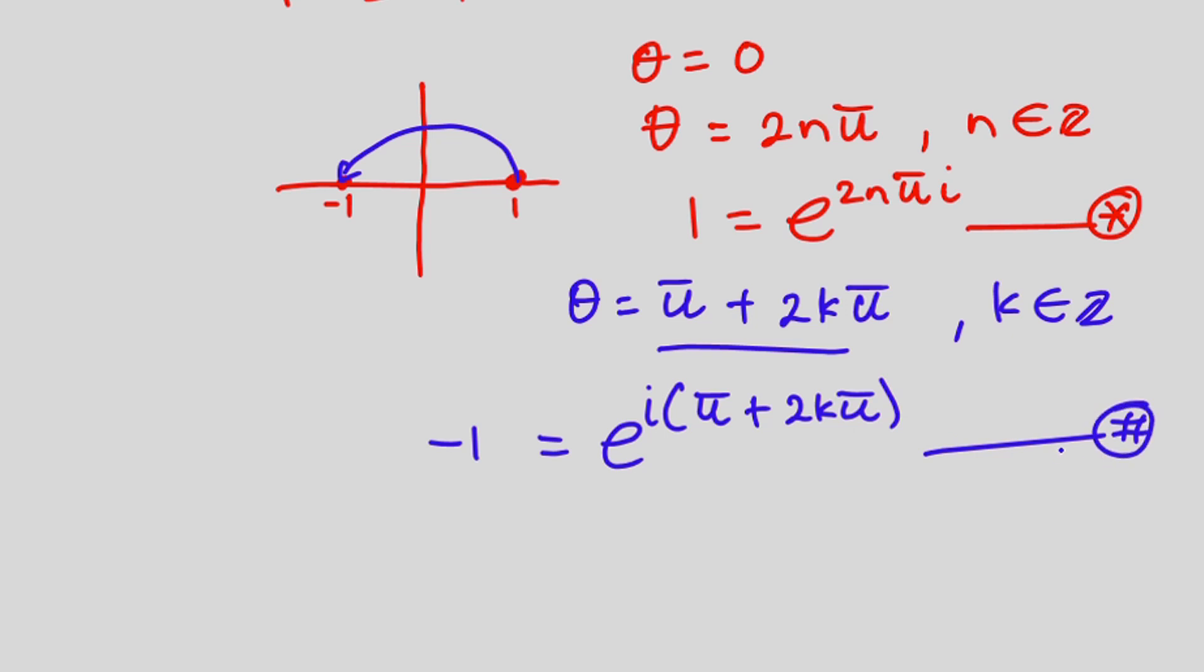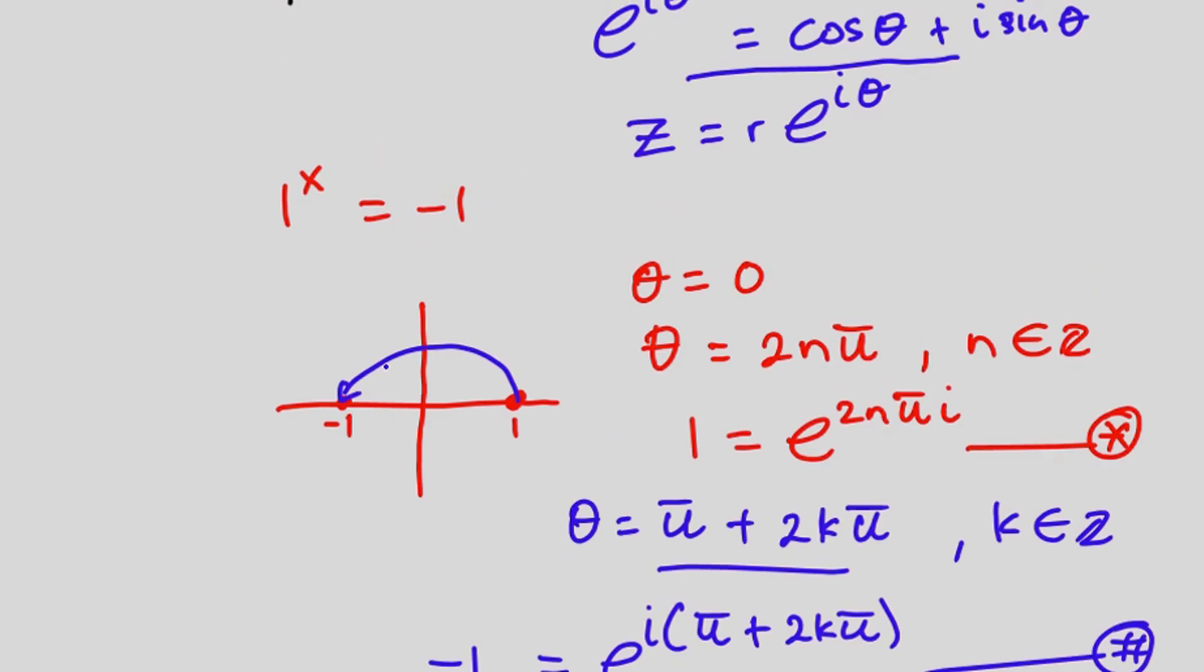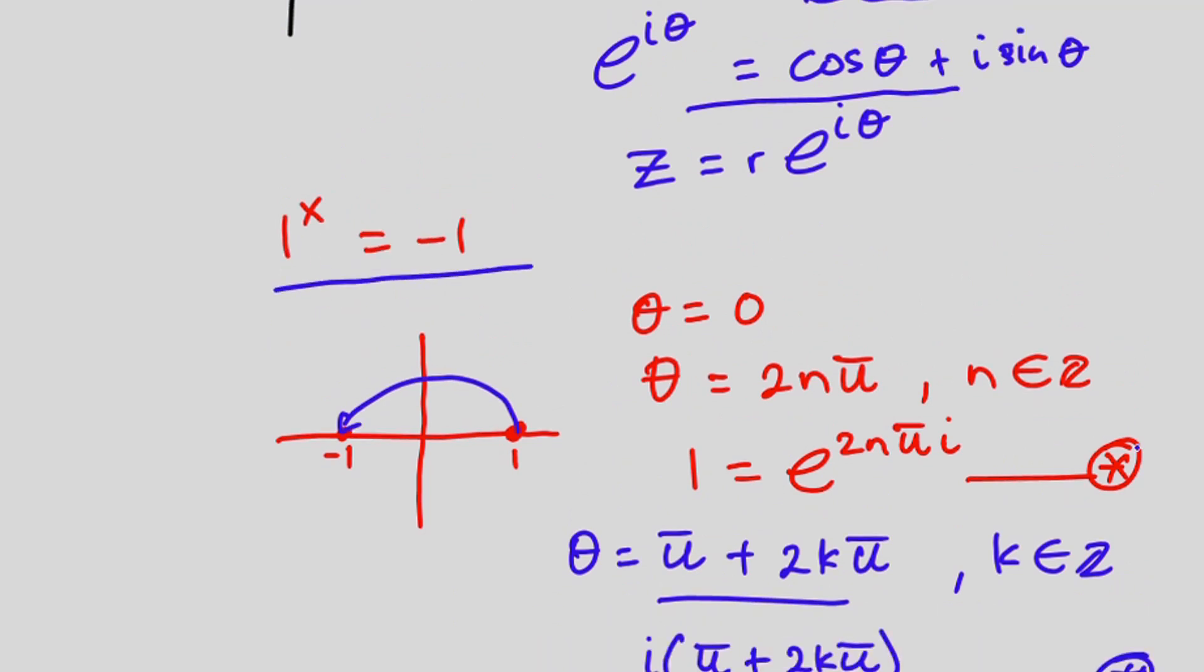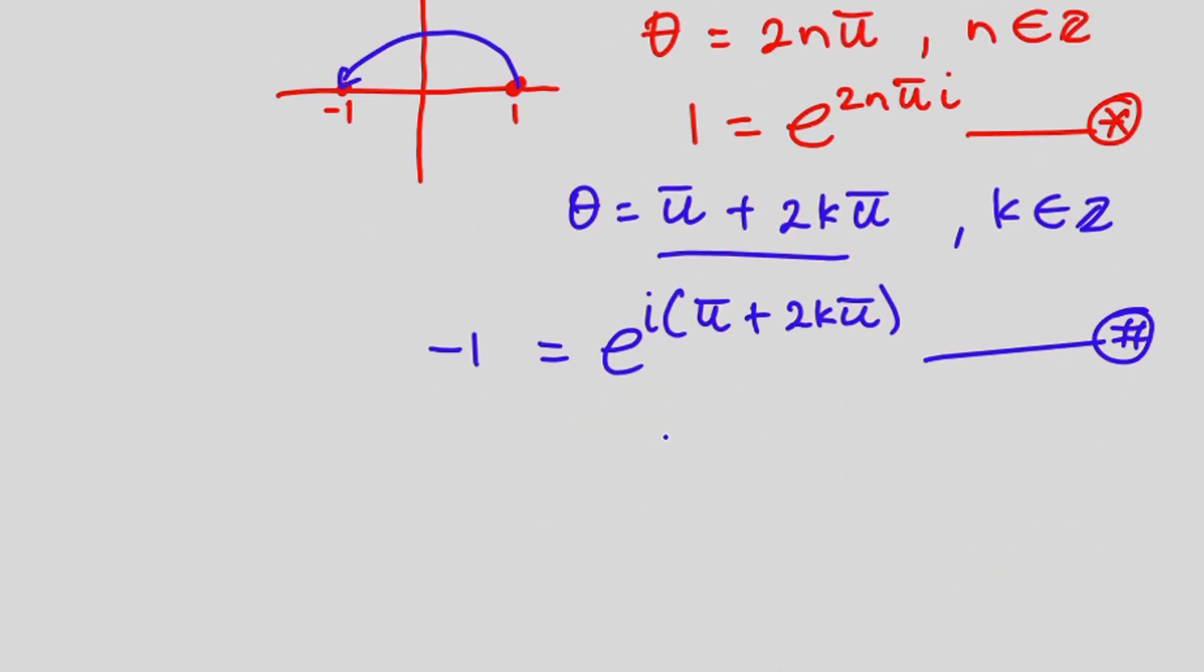Now let's go ahead and replace equation hash and star into the main equation. Wherever we see one we're going to put equation star and wherever we see negative one we're going to put equation hash. So we're going to have e to the power 2n pi i to the power x is equal to e to the power...